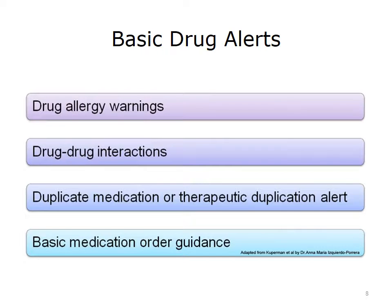Cooperman and colleagues identify four types of basic drug alerts. Drug allergy warnings are generated on ordering a drug to which the patient has a documented drug allergy. Drug-to-drug interactions are generated when the mode of action of one drug is known to be affected by simultaneously prescribing a second drug. Duplicate medication or therapeutic duplication alerts are generated when the patient is already receiving the medication just ordered or a different drug in the same therapeutic category. Basic medication order guidance is an alert that provides dosing information, with default dosing being the most appropriate initial dosing.